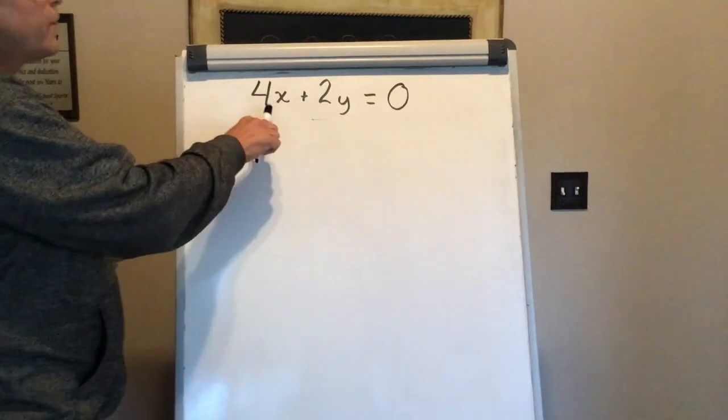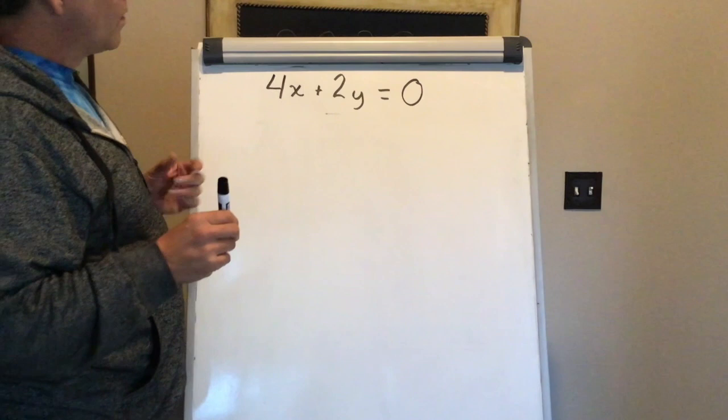Now, this says 4x plus 2y is equal to 0. This is in standard form. What we're going to do is convert it to slope-intercept form.